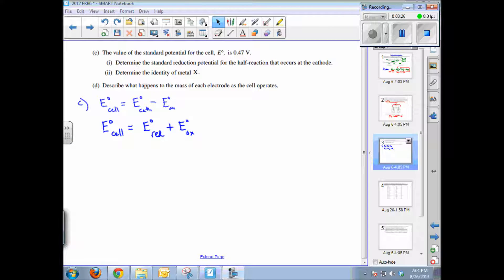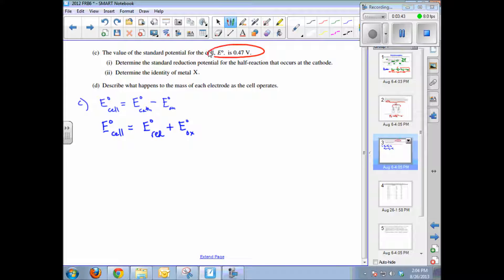Part C of the question asks you to determine the standard reduction potential for the cathode half reaction. The cathode is the unknown X, and then try to identify the metal X. We were given at the beginning the standard potential for the cell, which was 0.47 volts. And remember to calculate the overall potential for any voltaic cell is this formula right here. The standard cell potential is equal to the potential for the cathode minus the potential for the anode.